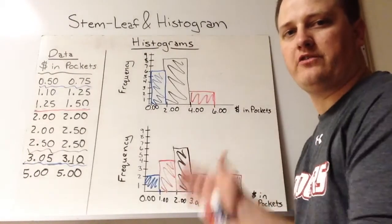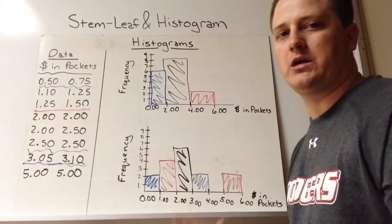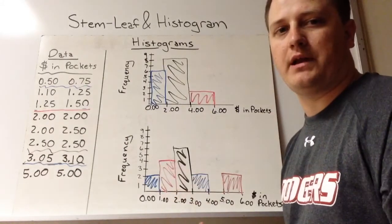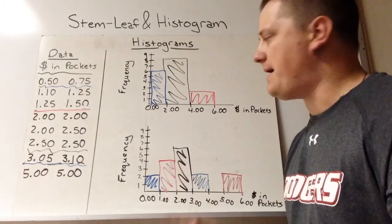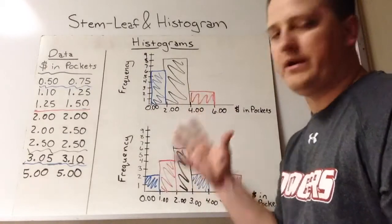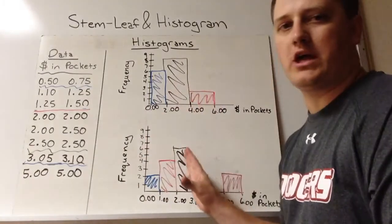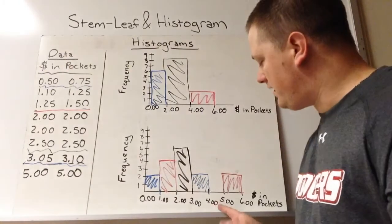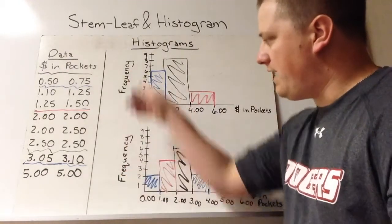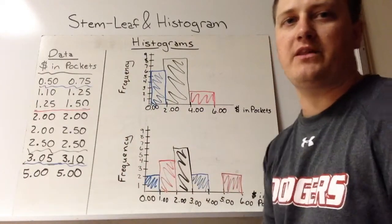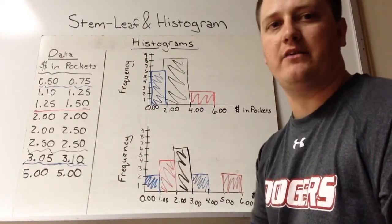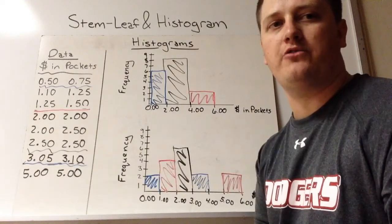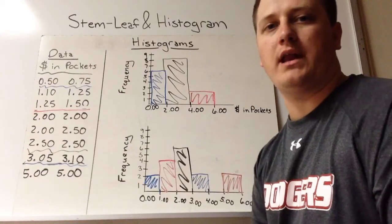Notice how the two histograms represent the exact same data but look completely different — the interval size is very important. Also notice that we don't know what the individual data points are; the graphs just tell us how much is in each grouping. We've labeled the bins on the bottom and the frequency on the side. This has been stem and leaf plots and histograms — if any part was unclear, pause, rewind, and rewatch, and bring any questions to class.